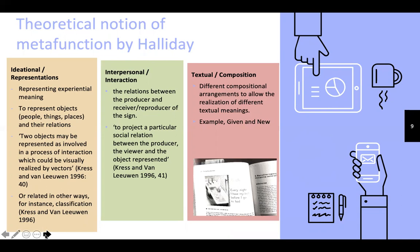For representation, it is about experiential meaning — to present the objects or participants, which can be people, things, or places, and how they are related to each other. For interaction, we look at the interaction between or among the participants, or between the producer and the receiver, in different kinds of social relations such as power, social distance, and so forth.